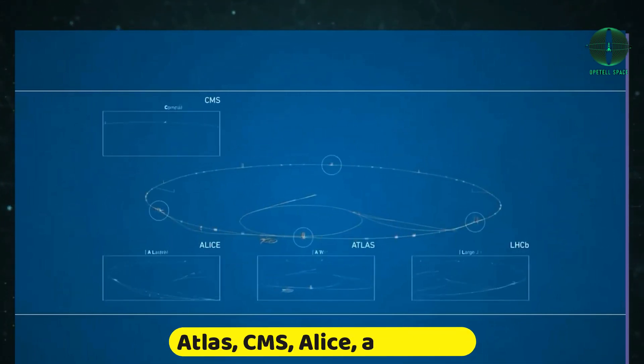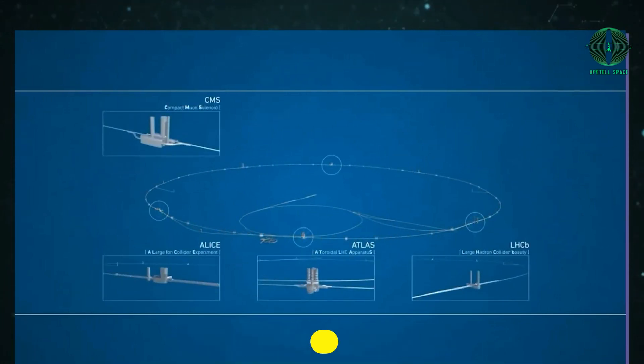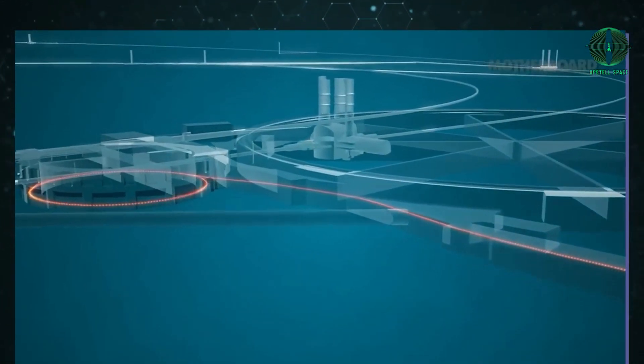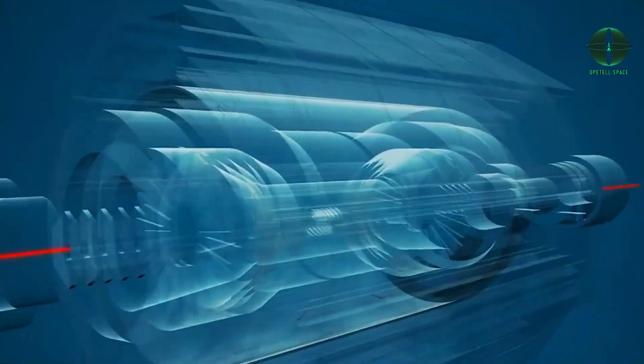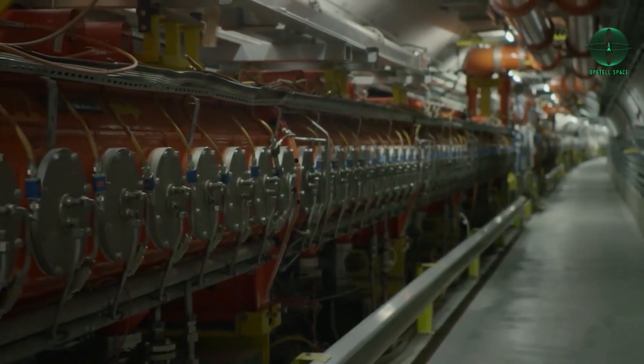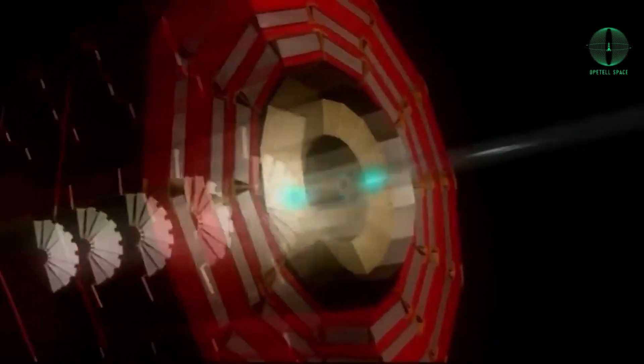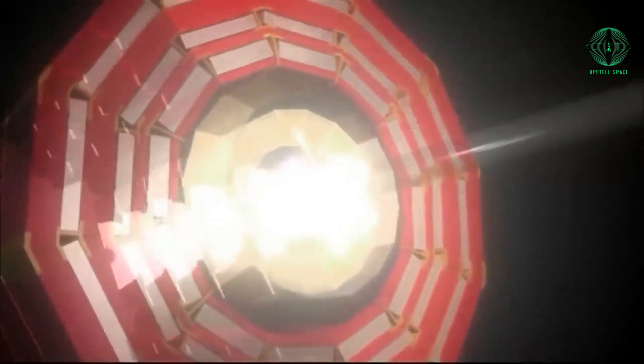Around the accelerator ring, four locations ATLAS, CMS, ALICE, and LHC-B are selected for the collision of LHC beams before they reach the accelerator. Two high-energy particle beams, nearly as fast as light, travel through tubes held in an extremely high vacuum. These beams move in opposite directions through separate pipes, guided by a powerful magnetic field sustained by superconducting electromagnets.